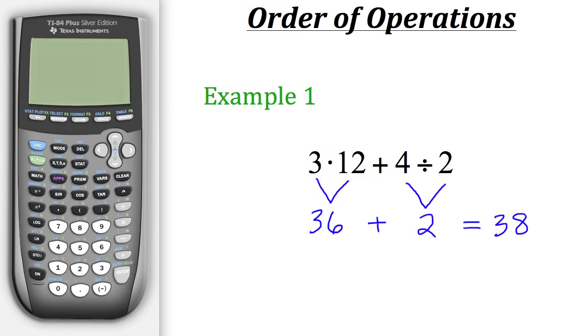Now as far as the calculator goes, the calculator knows the order of operations, and it will do them. So we could just type this in exactly how we see it: 3 times 12 plus 4 divided by 2. And it will do all the operations in the correct order. So when we hit enter, we also get 38 on the calculator.